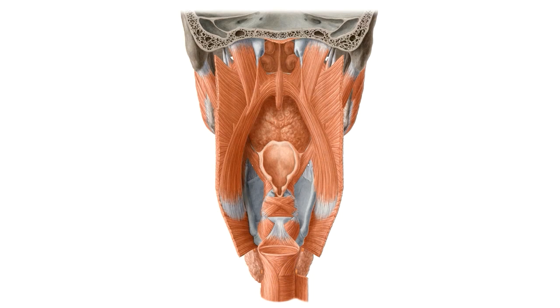Now the pharyngeal cavity is a common pathway for food and air. The walls of the pharynx are posterior to the margins of the nasal cavities, the oral cavity and the larynx.